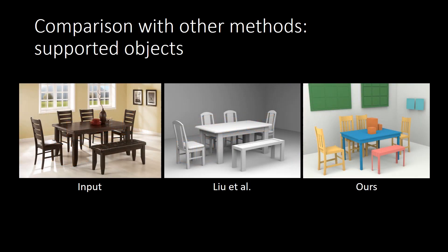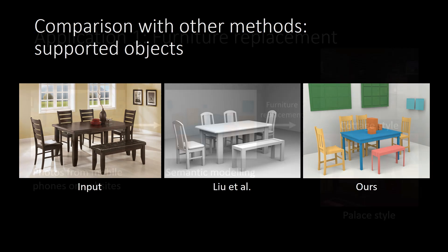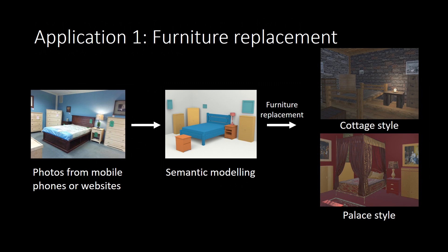As our method can detect more smaller pieces, with the support relationships estimated, more objects that are supported by others can be retrieved, such as dishes on the table, the windows, and the pictures on the wall. Here we give some applications.